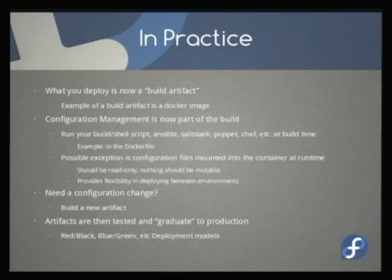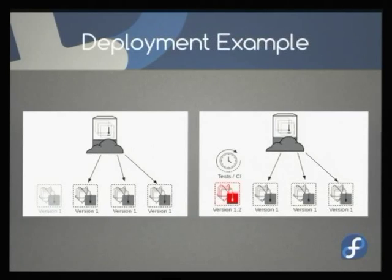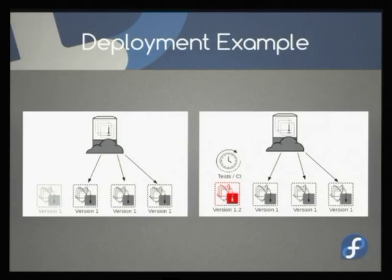This is good for red, black, blue, green deployment models. I'm going to walk through one deployment model as an example. Let's say you're running version 1 of your software and you want to do an update. You take a node out, upgrade it, or have your test and CI run through. Everything passes and you update to version 1.2, put it back in rotation. Everything looks good, so you roll it out to the rest of the environment.